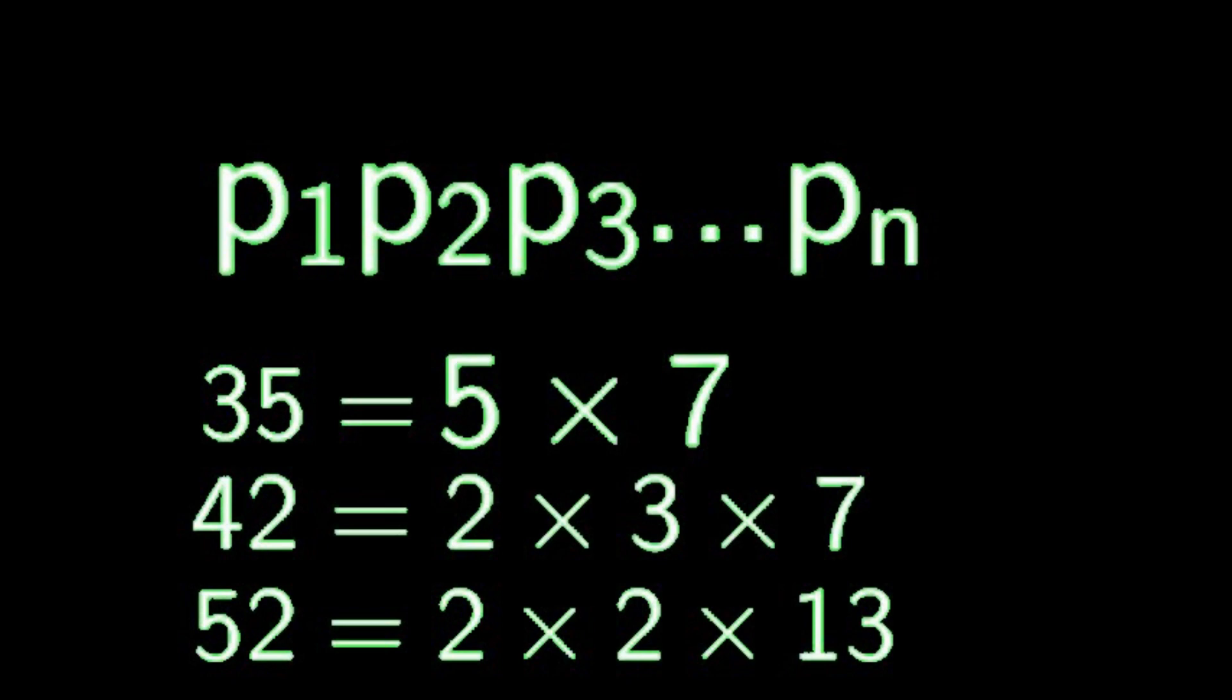What about the number 52? Well 52 has two prime factors, 2 and 13. Repeated prime factors don't really make a difference and for this reason they don't count.